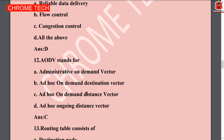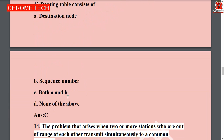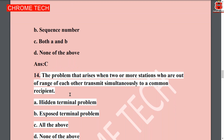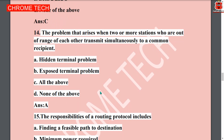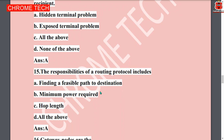Thirteenth question: routing table consists of — option C, both A and B: destination node and sequence number. Both A and B are correct, so option C is the answer. Fourteenth question: the problem that arises when two or more stations that are out of range of each other transmit simultaneously to a common recipient — option A is the correct answer — hidden terminal problem.